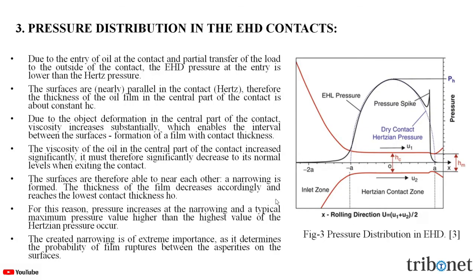The pressure distribution in the elasto-hydrodynamic lubrication contacts is one of the most important concepts in lubrication. Due to the entry of the oil at the contact and the partial transfer of the load to the outside of the contact, the EHL pressure at the entry is lower than the Hertzian pressure. The surfaces are nearly parallel in the contact, and therefore the thickness of the oil film in the central part of the contact is about constant, which is Hc. Due to the elastic deformation in the central part of the contact, viscosity increases substantially, which enables the formation of a film with the contact thickness.